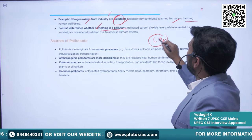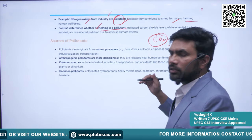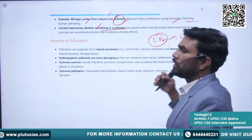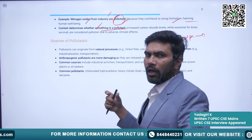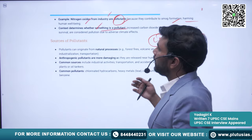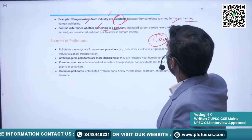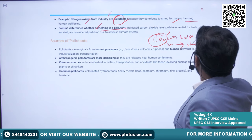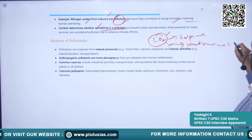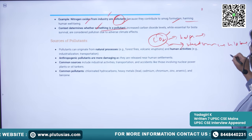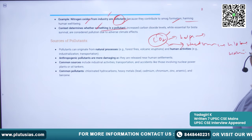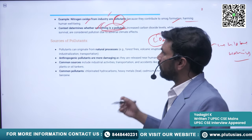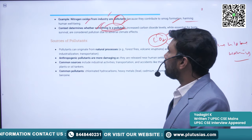Context determines whether something is a pollutant or not. The best example is carbon dioxide: when at sufficient levels it helps maintain the global average temperature, but when it exceeds its limit it becomes hazardous, causing global warming.